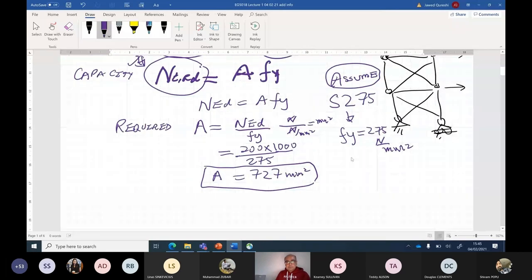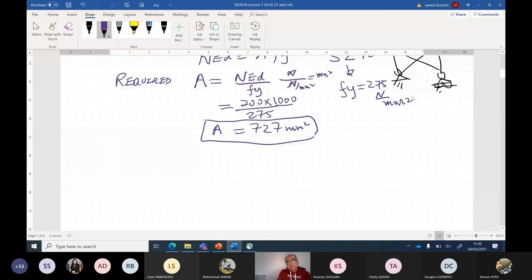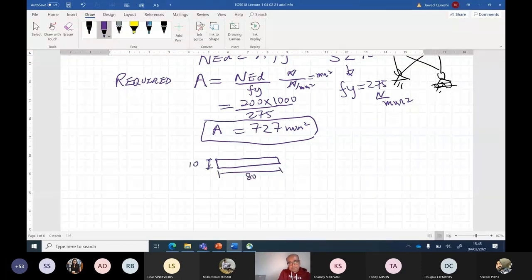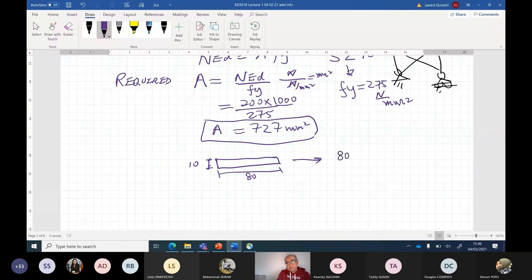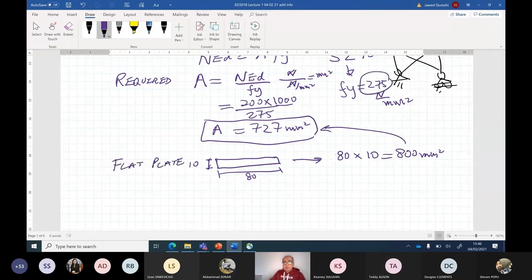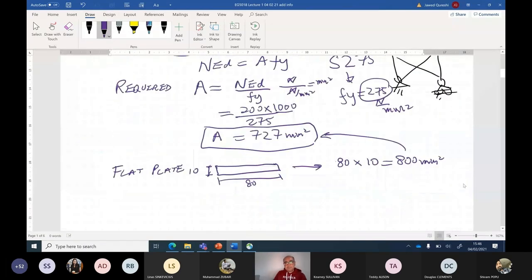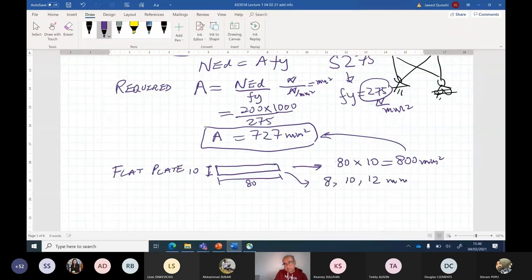If the unit for Fy is newtons per millimeter square, my resulting unit will be millimeter square. 200 times 1000 divided by 275 equals 727. You could use pretty much any section for this bracing. If I say I'm using a flat plate 10 millimeters, the area of this flat plate will be 80 times 10, which is 800 millimeters square. Will it be sufficient? Yes. So you could say use flat plate S275. In real life, the common thicknesses for these flat plates for bracings are 8, 10, and 12 millimeters.